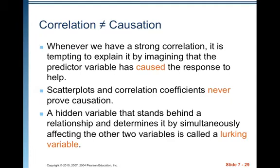One thing we have to keep in mind: even though we've made declarations of explanatory and response variables, correlation does not equal causation. Whenever we have a strong correlation, it is tempting to imagine that the explanatory variable has caused the response to occur. But scatter plots and correlation coefficients never prove causation. A hidden variable that stands behind a relationship and determines it by simultaneously affecting the other two variables is called a lurking variable.